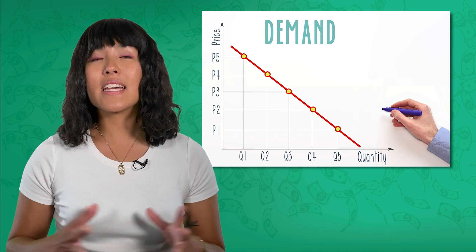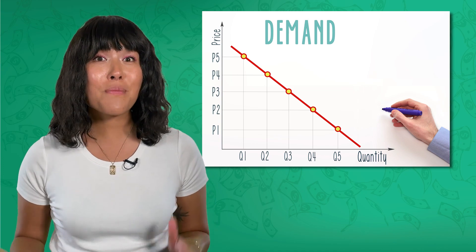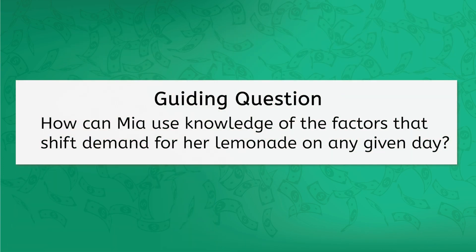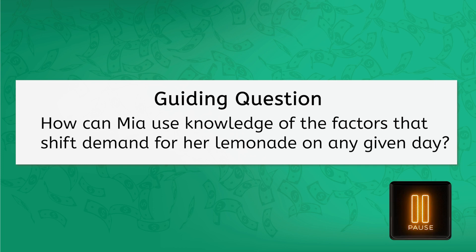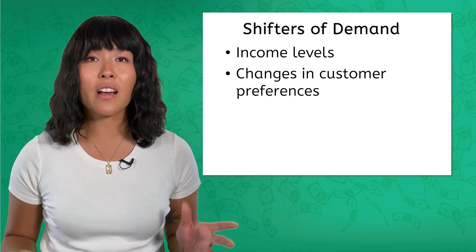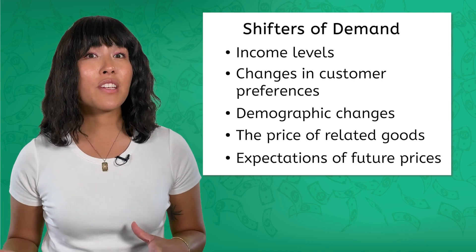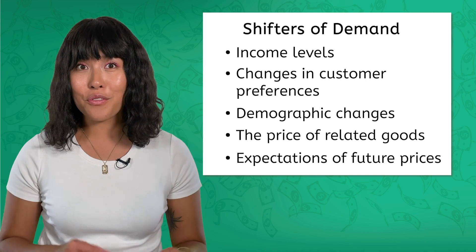While price has an impact on demand for Mia's lemonade, there are other non-price factors that can shift demand in a market. How can Mia use knowledge of the factors that shift demand for her lemonade on any given day? Pause the video while you answer the question. On any given day, Mia has an expectation about how much lemonade she thinks she'll sell, but things like income levels, changes in customer preferences, demographic changes, the price of related goods, and expectations about future prices can all impact demand.